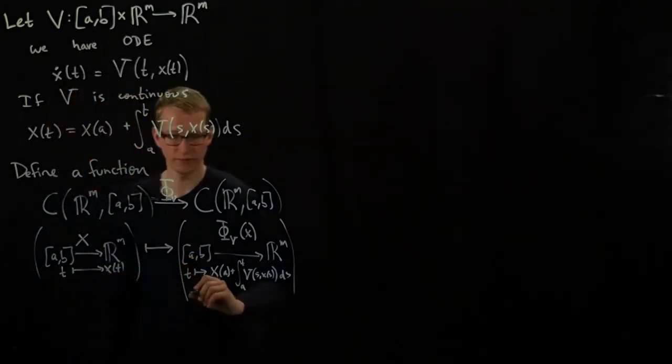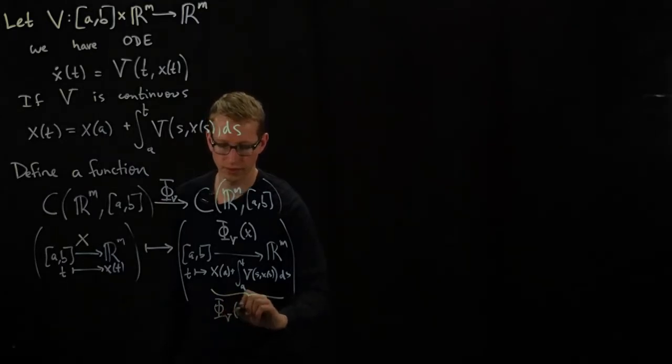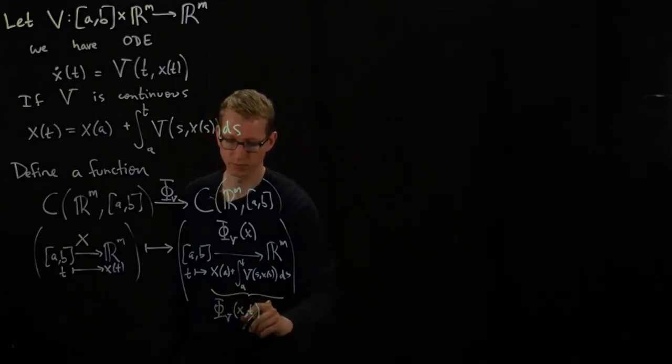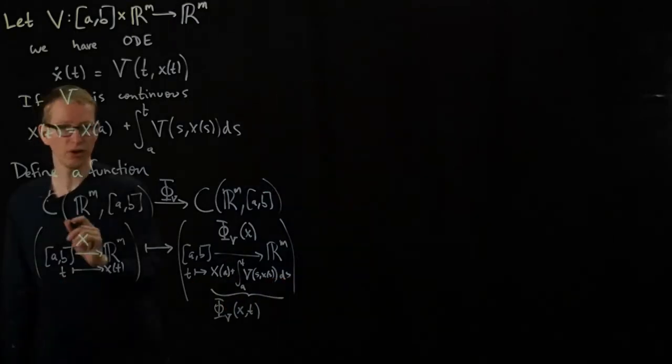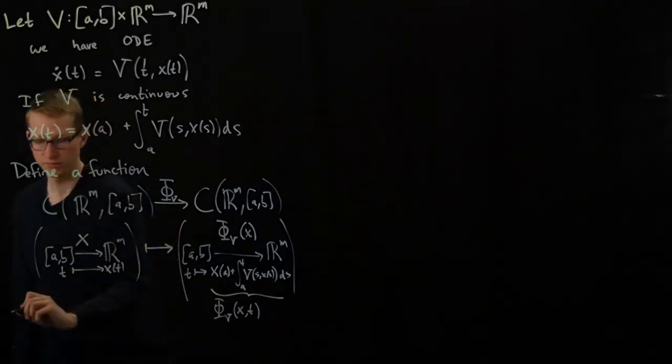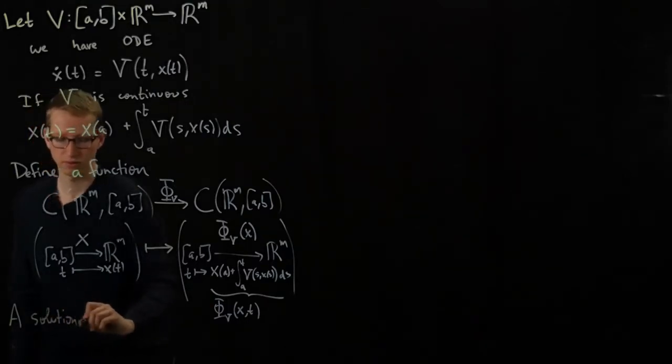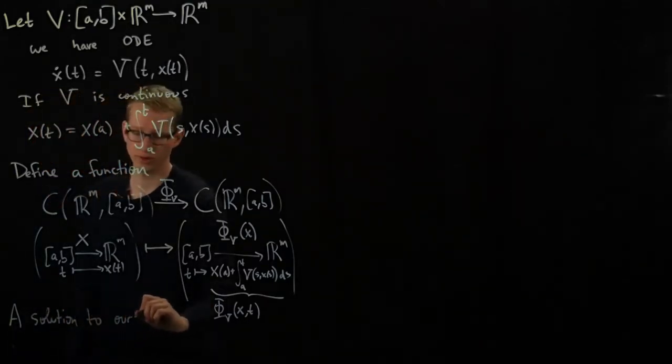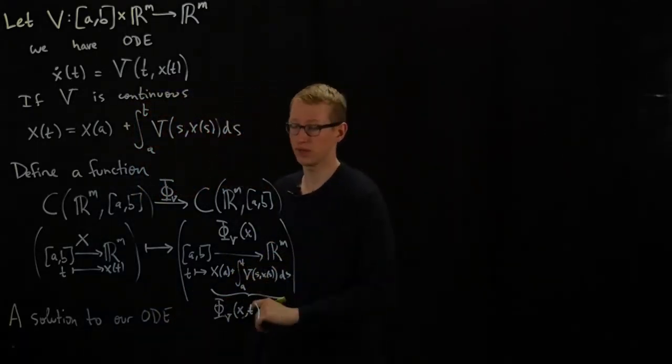So we might often write this output as φ_V(x,t) because it depends on these two parameters. Now that we've defined this function, a solution to our ordinary differential equation is exactly a fixed point of this function.